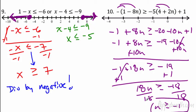So n is greater than or equal to negative 1: go up to negative 1, greater than or equal to, fill it in. Don't forget your open circles on problems that don't have equal to. That's it for these examples.